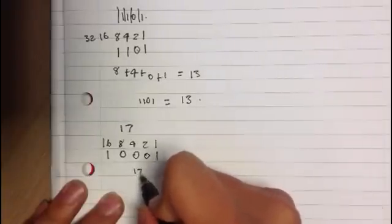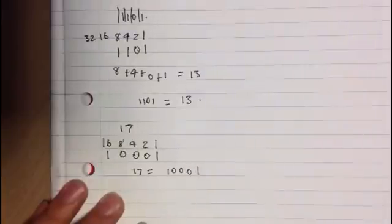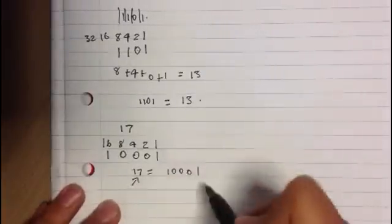So 17 would equal 1, 0, 0, 0, 1. So that's decimal, that's binary.